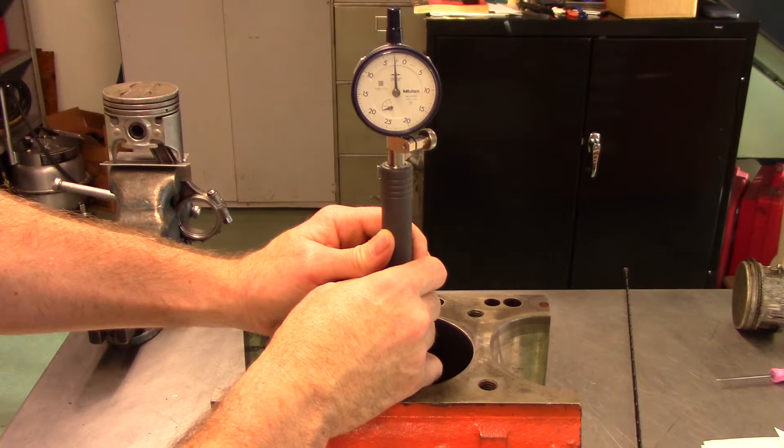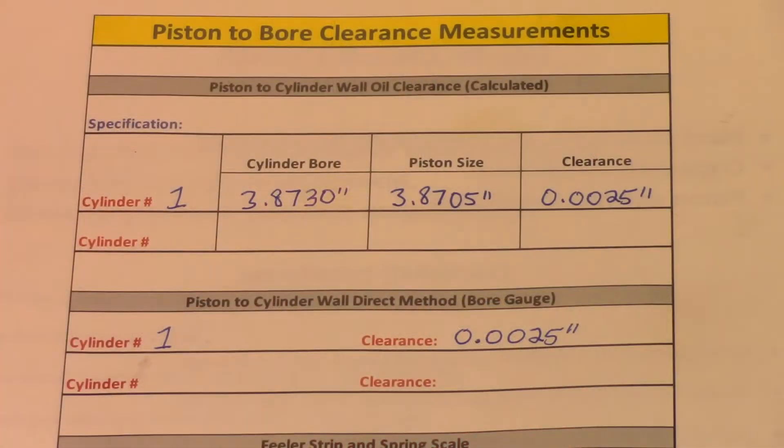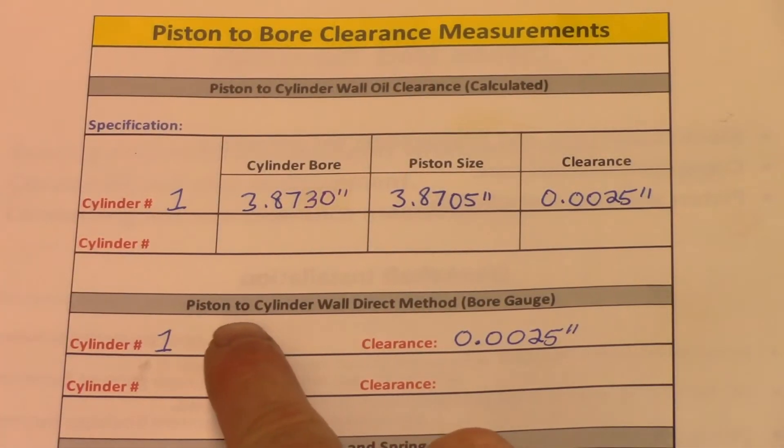Whatever reading the bore gauge displays is our piston to cylinder bore clearance. In this example it reads 0.0025 inches.